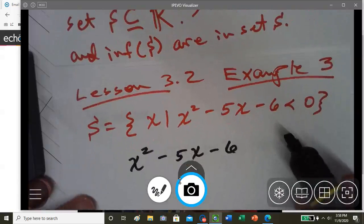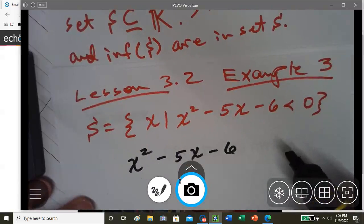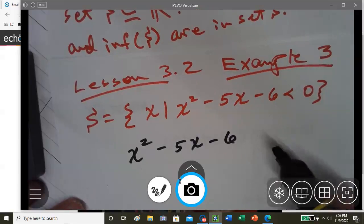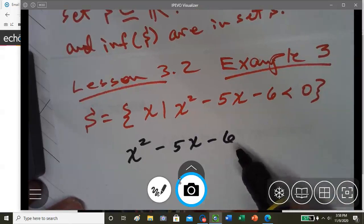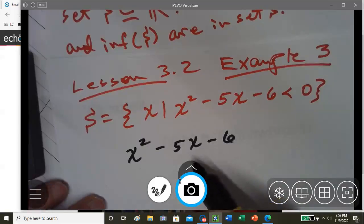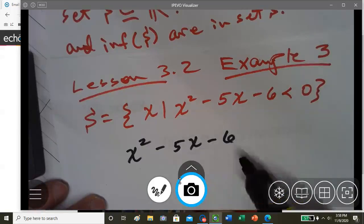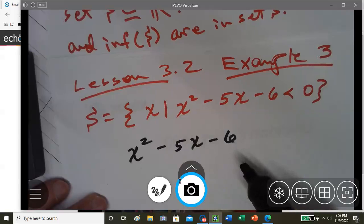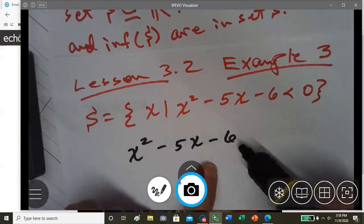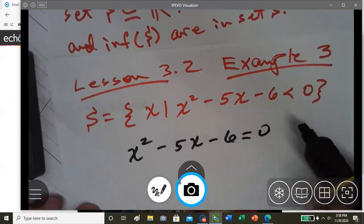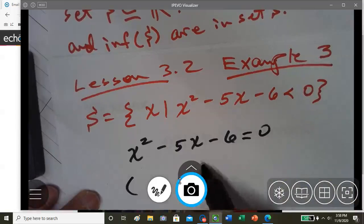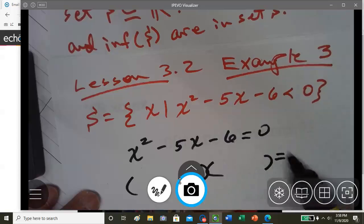So what we have to do here with solving for an inequality, we have to find the boundaries. And so with the boundaries, we set it equal to 0 and then we factor to find our boundaries.